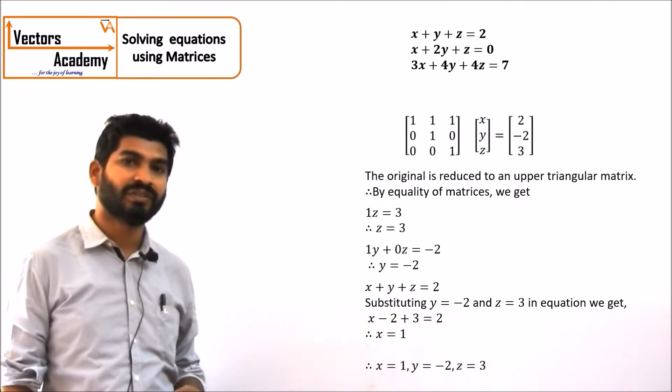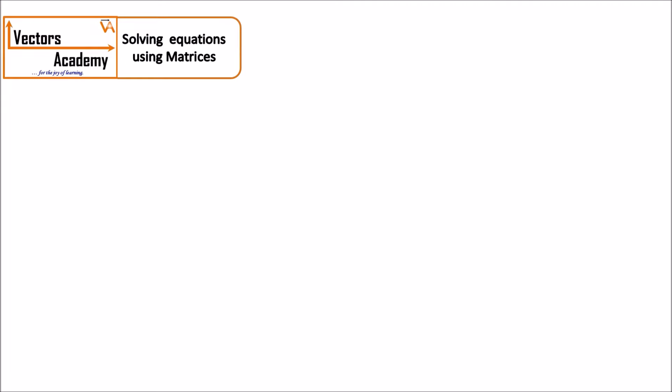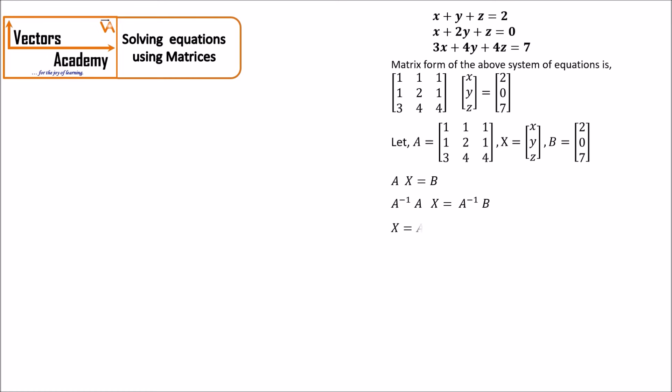This is how we solve the equations using matrices. Now we will solve the same question using the method of inversion. In this method, we again represent the question in the form of matrices and name all three matrices. The first matrix is called A — the matrix of coefficients. The second matrix is named x and the last matrix is termed B. If you multiply both sides by A inverse, what we get is x equals A inverse times B.